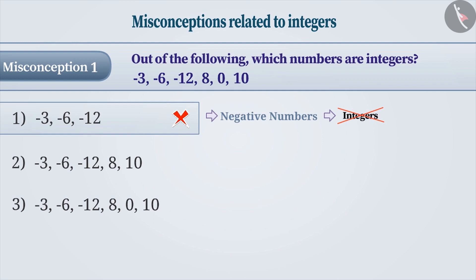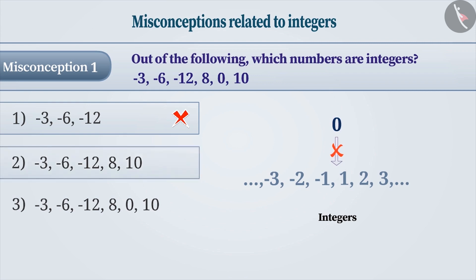Similarly, it is understood that the collection of integers has positive numbers and negative numbers alone, and no zero, which will lead you to choose option 2, which is again incorrect.